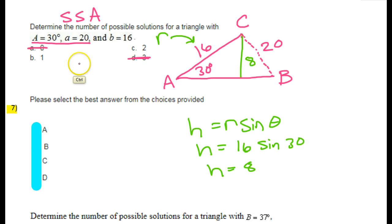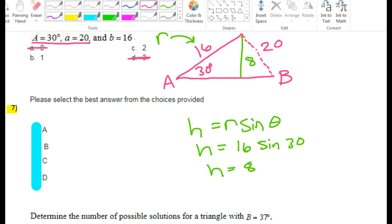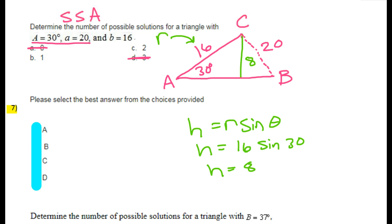So we can forget about zero triangles, and there's no way to make three triangles. It's zero, one, or two—those are the only choices. Now the question is, will there be exactly one triangle or will there be two triangles?